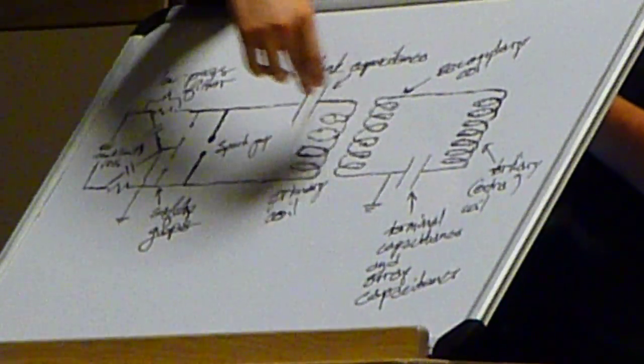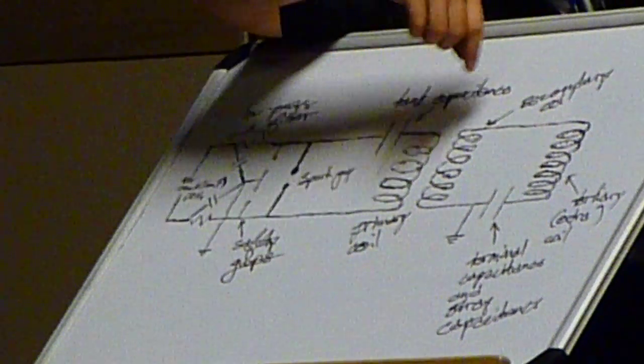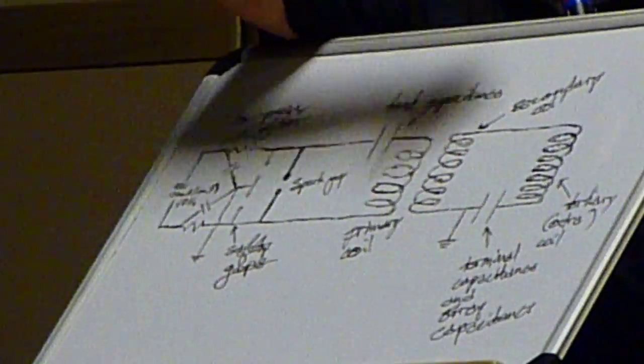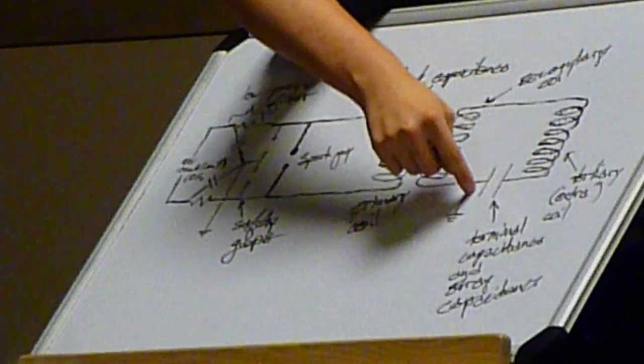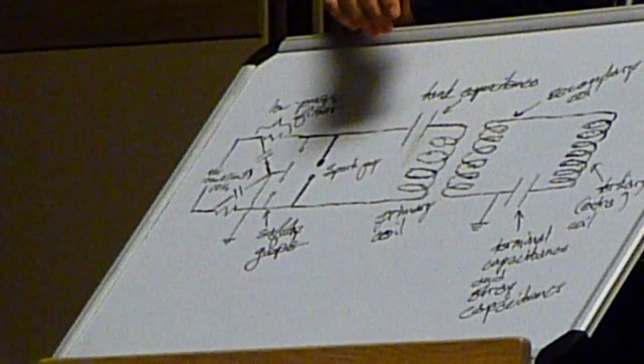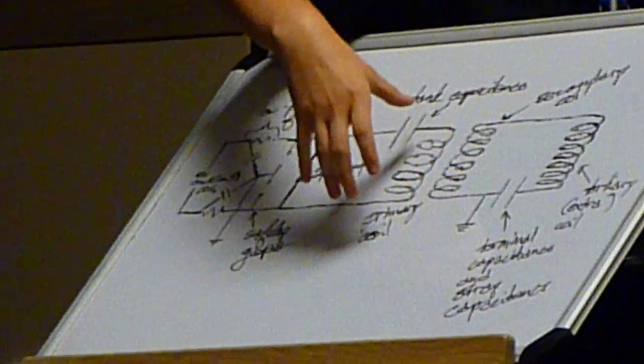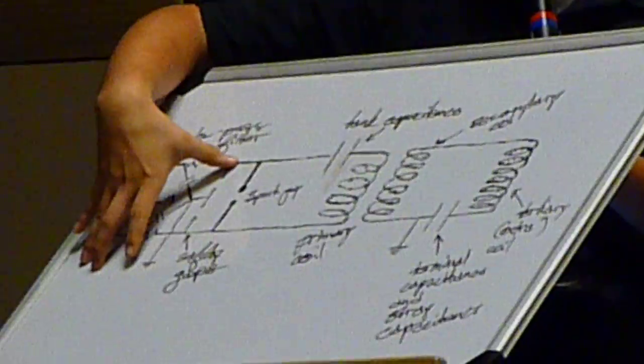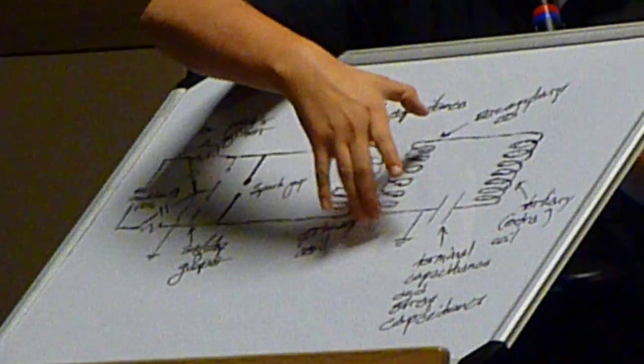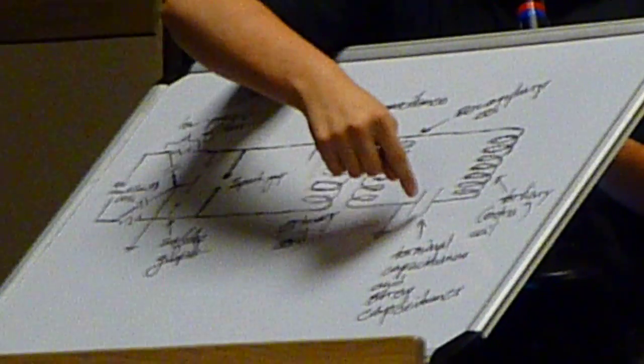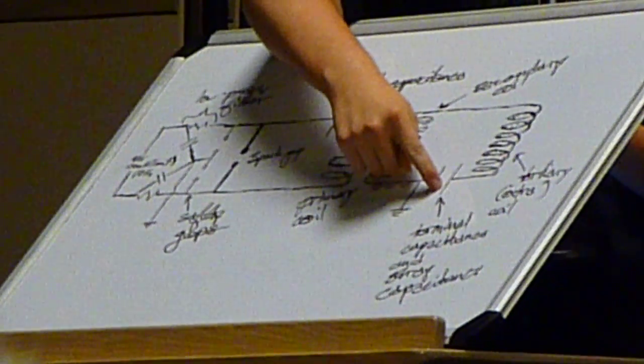This right here represents the big donut up top called a toroid. This is ground, so there's capacitance relative to ground. The massive difference in inductance between these two circuits allows for a step up of voltage from 9,000 volts right here to about 100,000 volts at the beginning of the transmission line, and finally to 350,000 volts when it comes out.